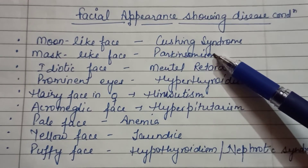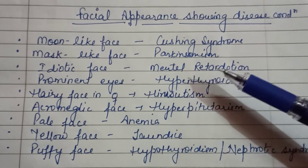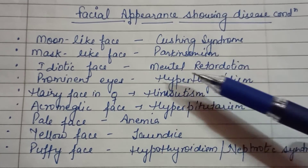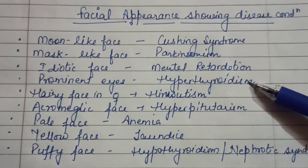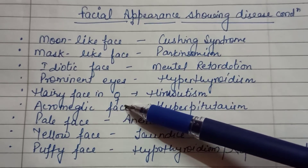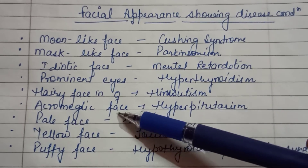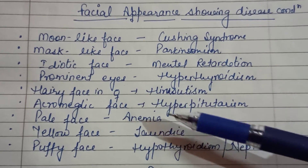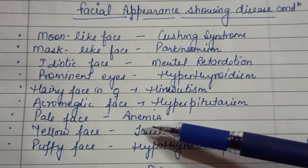Idiotic face is seen in mental retardation, prominent eyes in hyperthyroidism, hairy face in females indicates hirsutism, and acromegalic face is seen in hyperpituitarism.